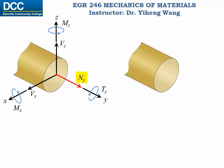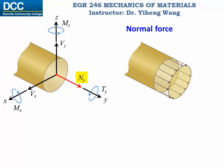For the normal force, we assume that the stress caused by it follows a uniform distribution. Therefore, for any arbitrary point on this cross section, the normal stress sigma_n is always determined through this equation, with A being the total cross sectional area of the cross section.